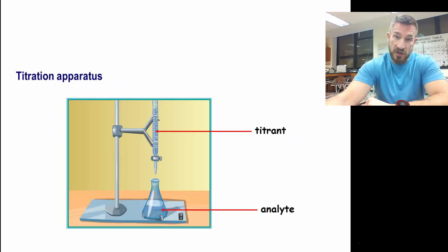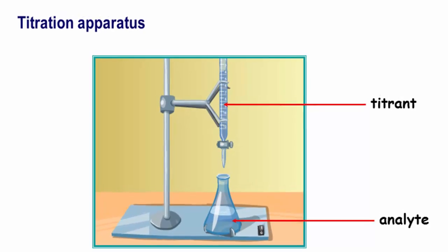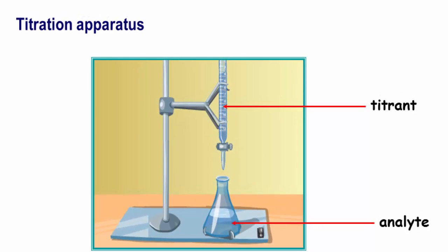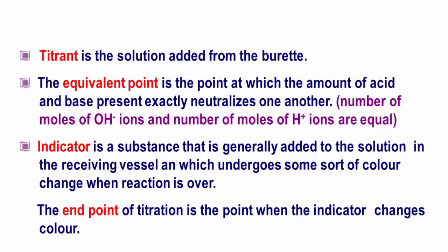The titration apparatus will look like this. The titrant will be in the burette and whatever we're analyzing will be in our linear flask. The titrant is a solution added to the burette. The equivalence point is when your moles of acid equals your moles of base. The indicator is what's generally added to the solution to receive a change in color when the reaction is over, and the end point is when the indicator changes color.